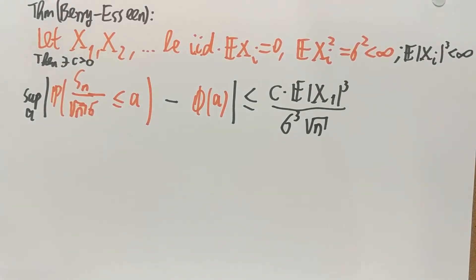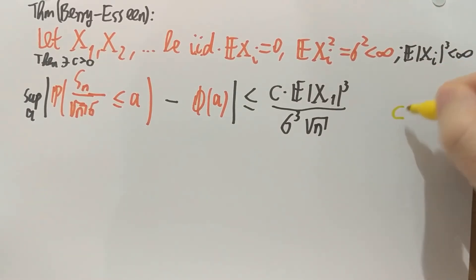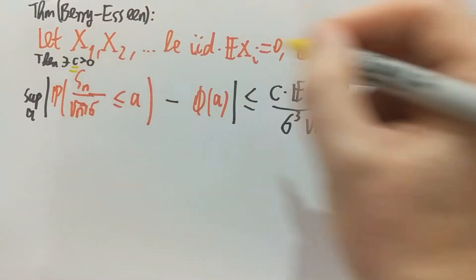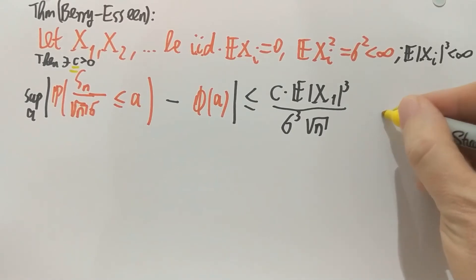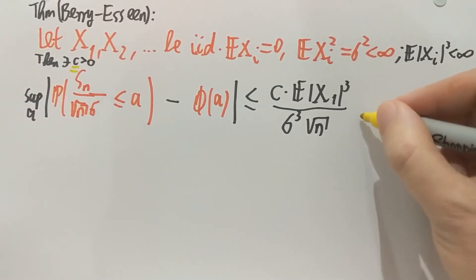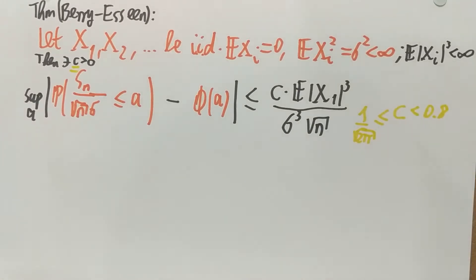This constant actually is known to be at most 0.8. So there are different versions of this theorem. The constant C is known to be smaller than 0.8. It's also known to have a lower bound. It cannot be made smaller than 1 over root 2π in the version I know of, because if we make it any smaller, then the theorem will not hold for all distributions and all a's. So that's Berry-Esseen theorem.